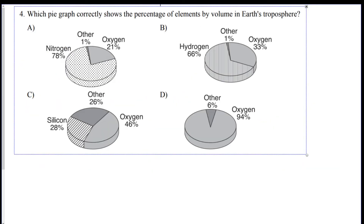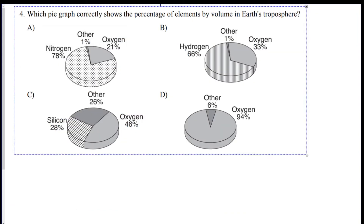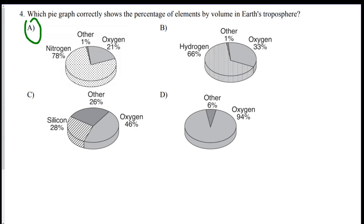Question four: which pie graph correctly shows the percentage of elements by volume in the earth's troposphere? We use page one for this. The troposphere by volume is approximately 78% nitrogen, 21% oxygen, and 1% other. So 78% nitrogen, 21% oxygen — that's answer A.